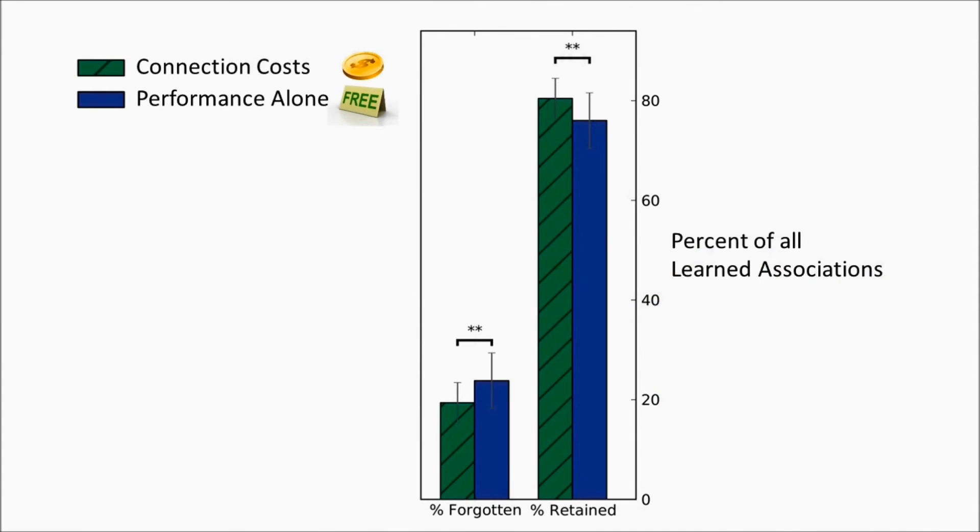One of the lines of evidence for the advantage of modularity in reducing interference comes from the following experiment. We measured how much networks retain and forget of previous skills as they learn a new skill. The results show that the modular connection cost networks forget their learned skills less, and correspondingly retain them better.